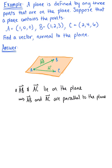So, how can we find a vector that's normal to the plane? And again, normal is equivalent to perpendicular or orthogonal.